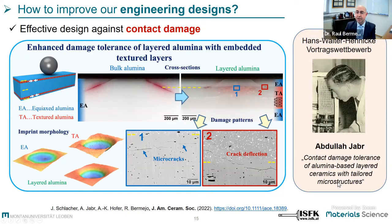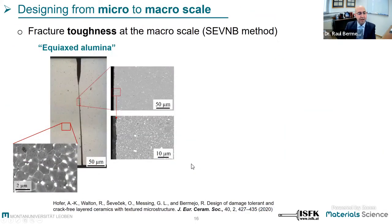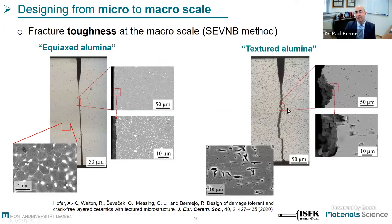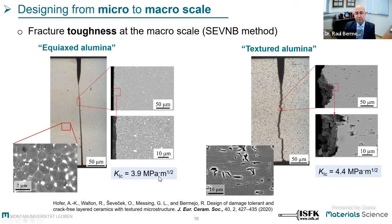More details can be found in our contribution. I would like to draw attention to micro-scale fracture measurements: if we measure fracture toughness at the micro scale using single edge notch beam tests, we get classical brittle fracture on equiaxed alumina. If you have textured alumina it may not look as brittle, but the values obtained are relatively similar — just by texturing you can get maybe a 10 to 15 percent improvement, but it doesn't appear to be very effective from texturing alone.